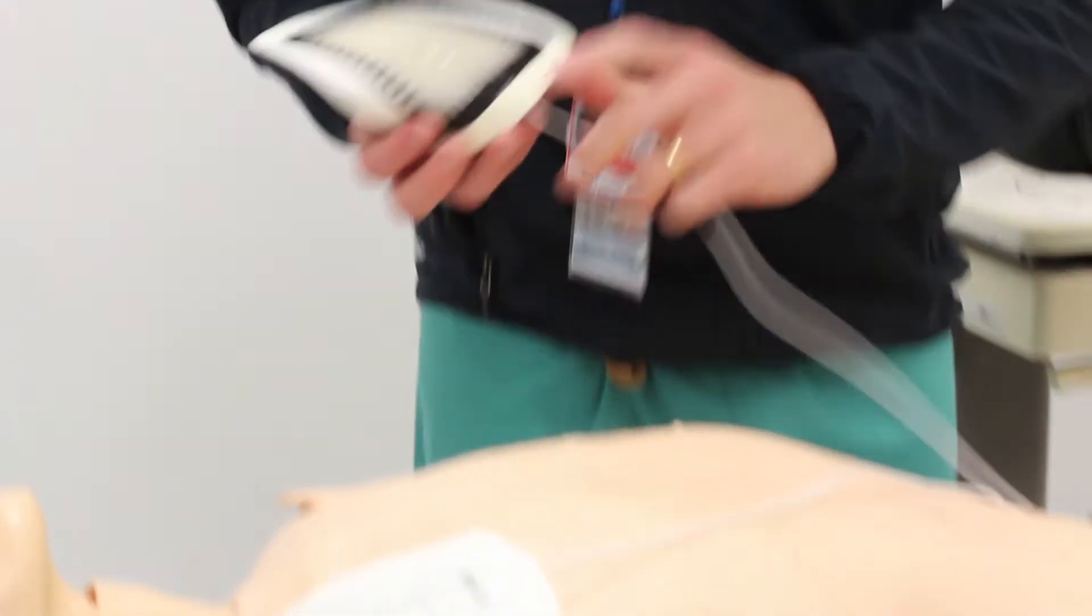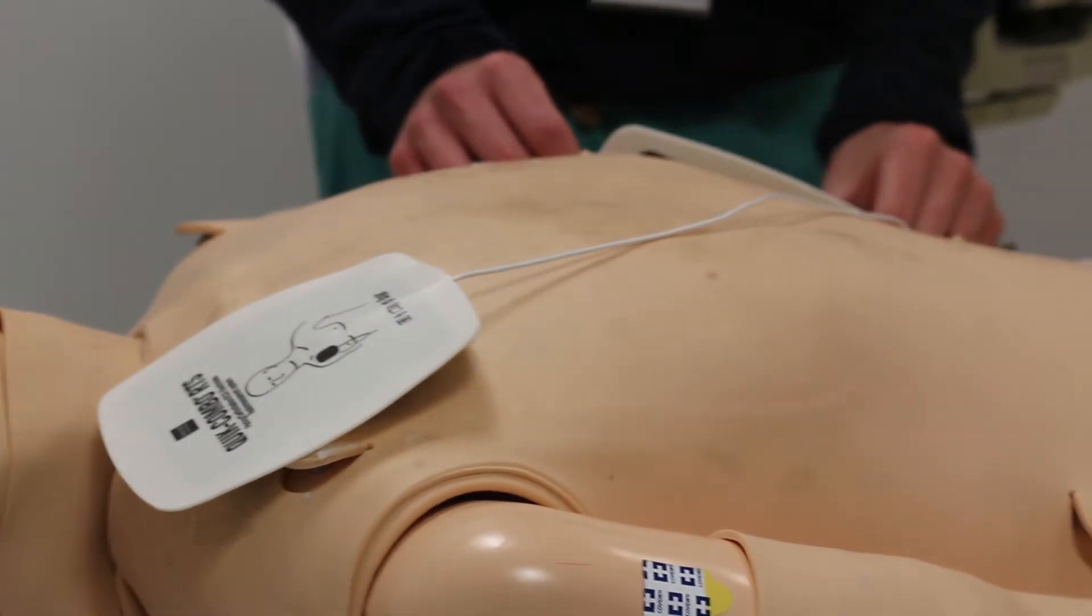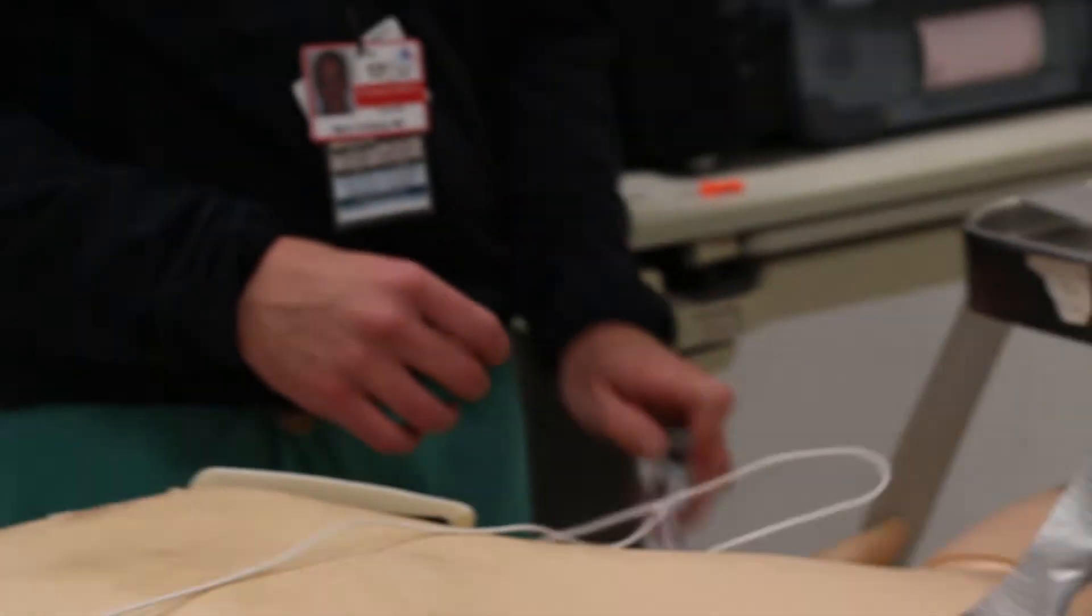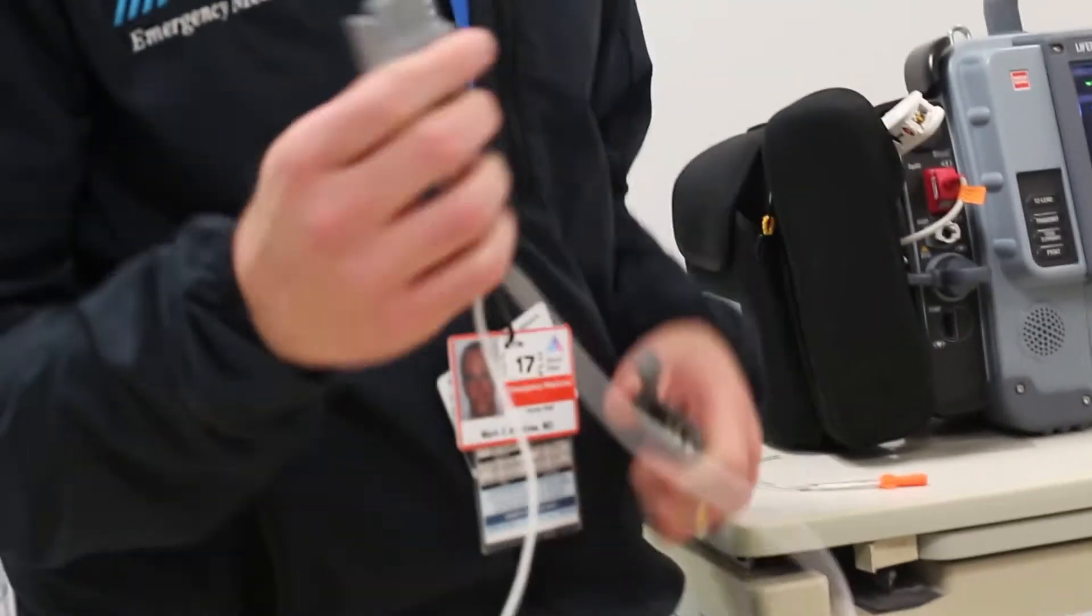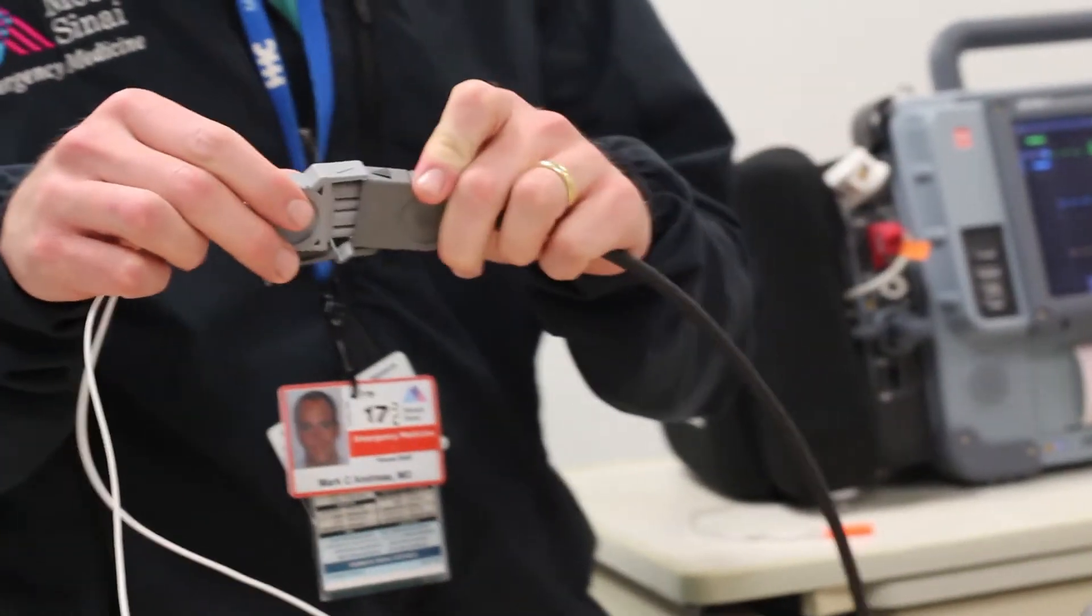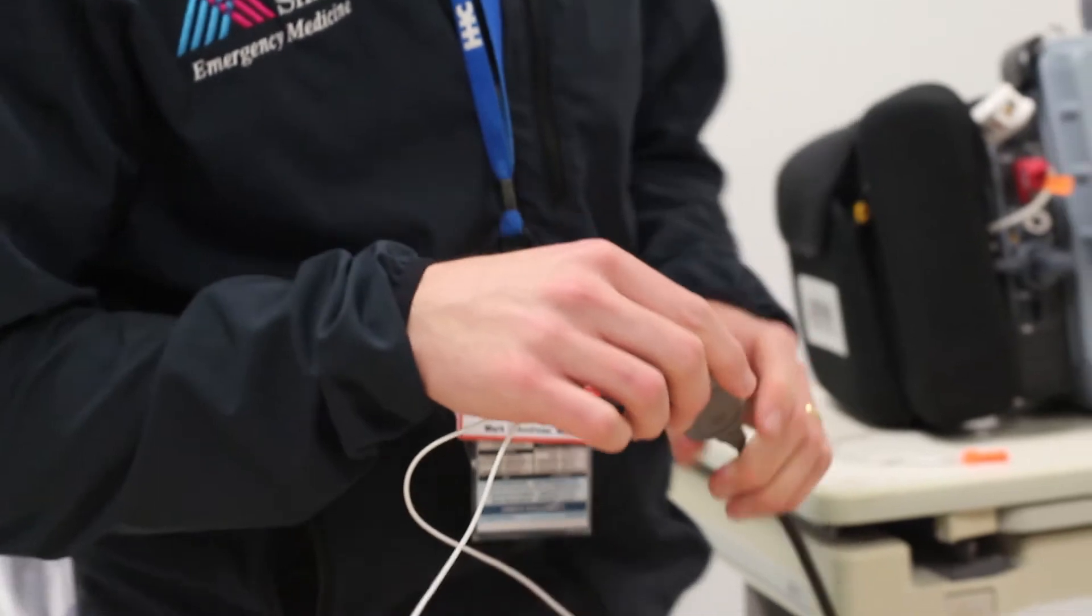The pads go in the standard placement and function as your 3-lead ECG. If you're receiving a cardiac arrest from one of the Mount Sinai ambulances, they use the same unit. You'll be able to unplug their pads and plug them into our unit. With that, I'm going to switch the pads on the patient.